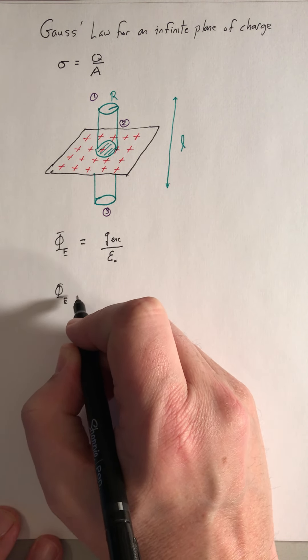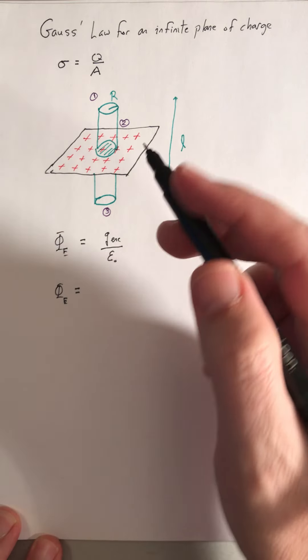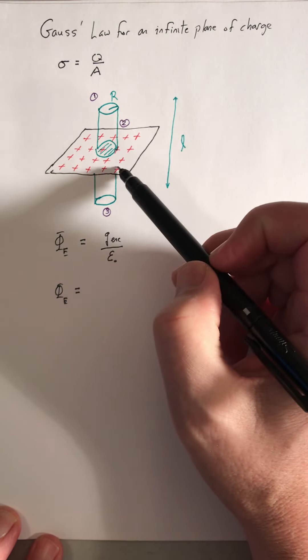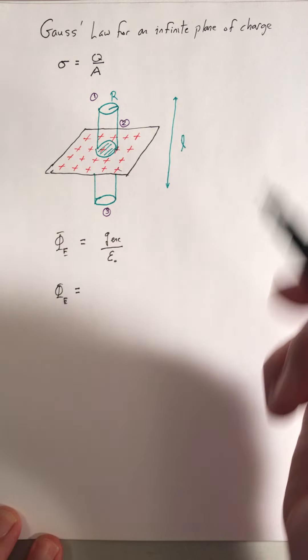So the flux of the electric field is going to have three parts. The flux through the top, the flux through the side, and then the flux through the bottom.